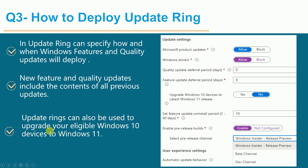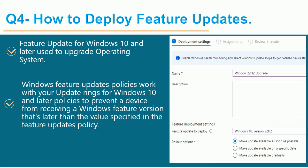Update rings can also be used to upgrade eligible Windows 10 devices to Windows 11. There is an option to upgrade Windows 10 devices to the latest Windows 11 release. You can also select your pre-release channel type — the Windows Insider beta channel or the dev channel — controlling how quickly you want to deploy all patches.